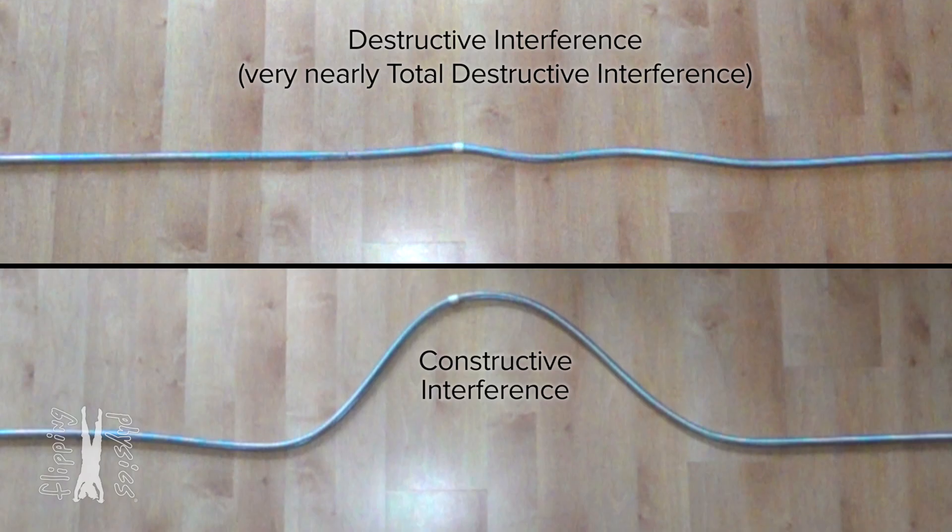If the two waves have the same shape and amplitude but are on opposite sides of equilibrium, then we do get total destructive interference. The reality is that it is difficult to show a real example of total destructive interference because the two waves need to be perfect inverses of one another.